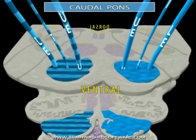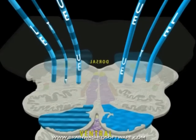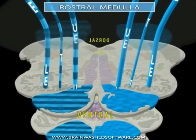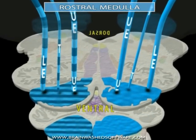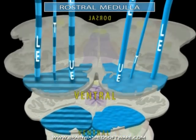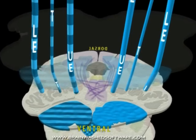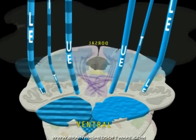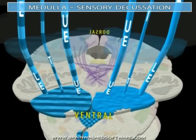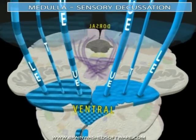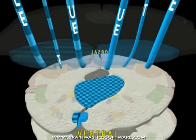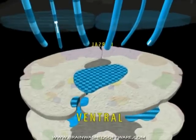Note that the position of these corticospinal fibers is ventral throughout their course through the brainstem. At the most caudal portion of the medulla, most of the fibers begin to course dorsally and cross the midline. This is known as the motor decussation.